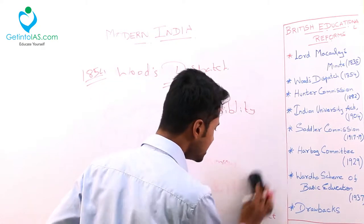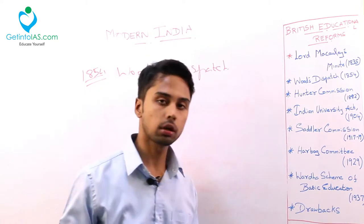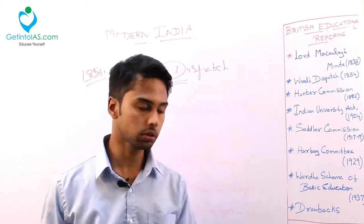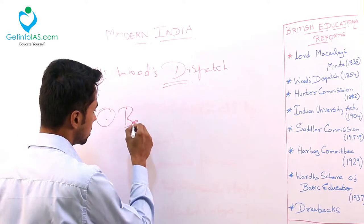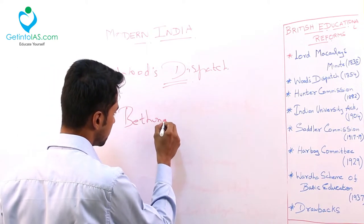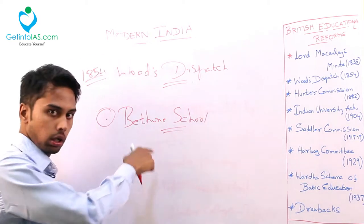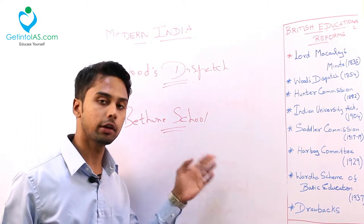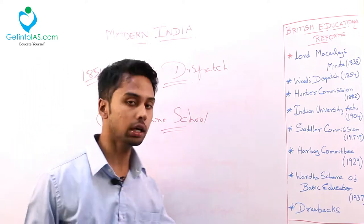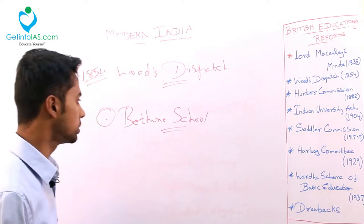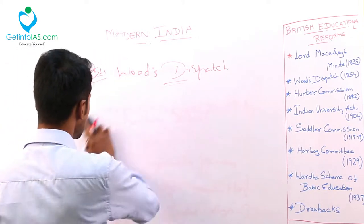Female education was promoted as one of the recommendations of Wood's Dispatch, along with Scientific Education. When talking about female education, one thing to be remembered is Bethune School, started by G.D. Bethune. This is the first school started in favour of further education of women, set up in Calcutta. That is why Wood's Dispatch is very important.